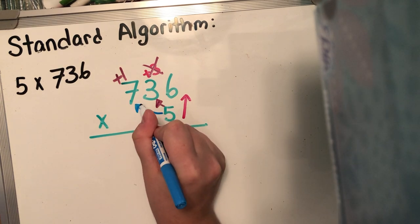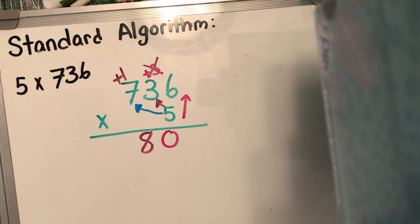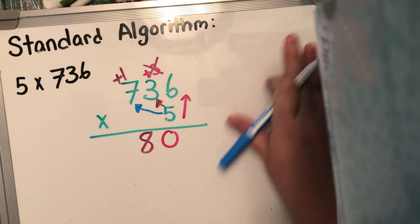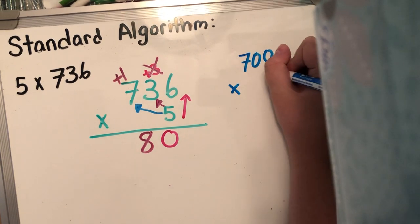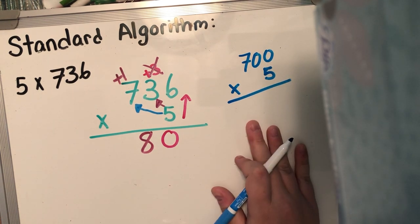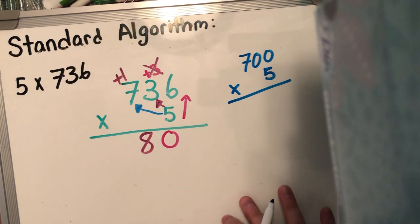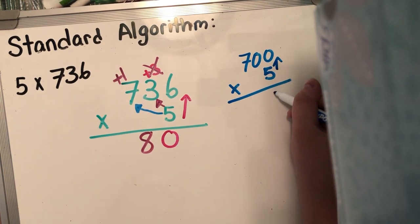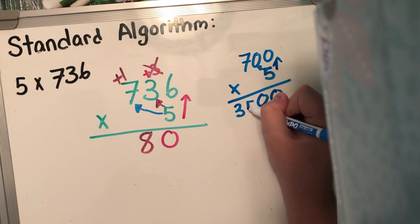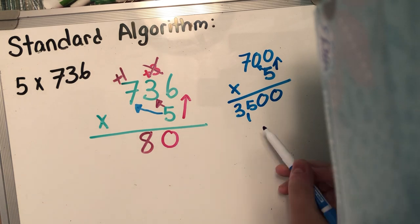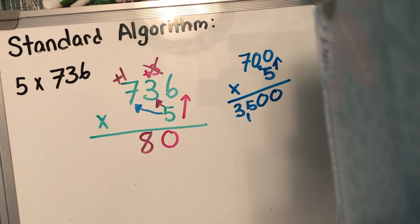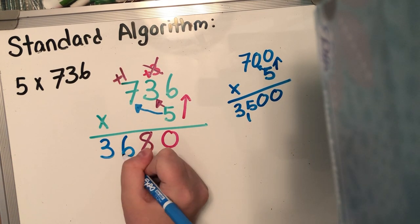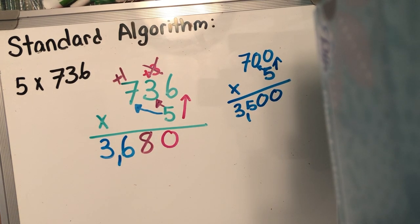Now we're gonna go across to the hundreds place. So five times 700 — I know that five times seven is gonna give me 35 and I'm in the hundreds place. So I'm gonna tack on two additional zeros to get 3,500. But if you can't do that in your head, please go ahead and off to the side, write it out and solve it. There's no shame to this — I don't want you guessing and getting a wrong number. Go up the ones, go across to the tens, go across. So five times 700 is 3,500 plus an additional one, which gives me 36.